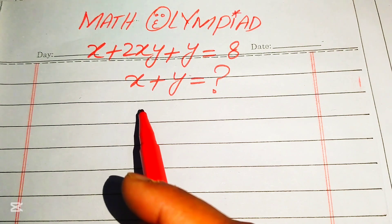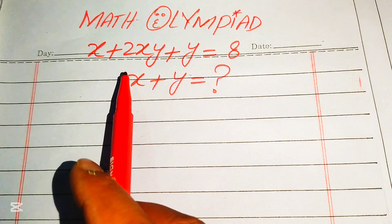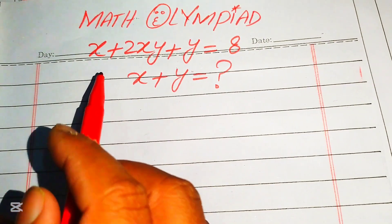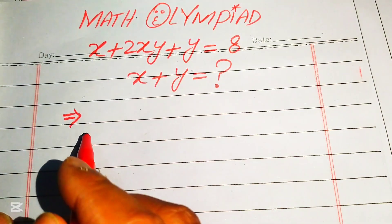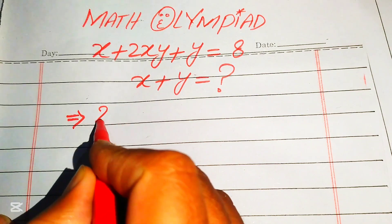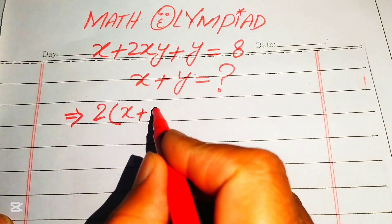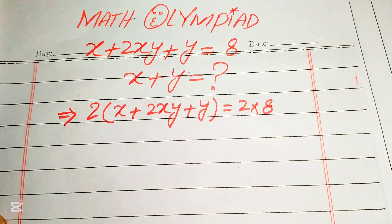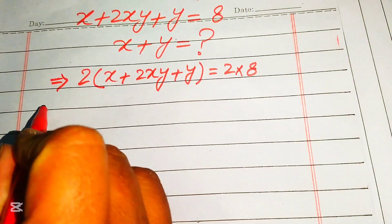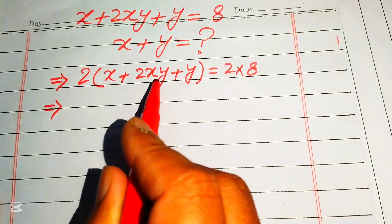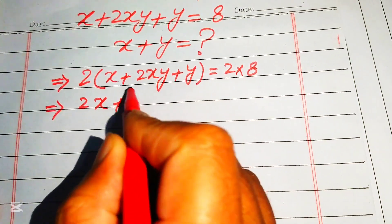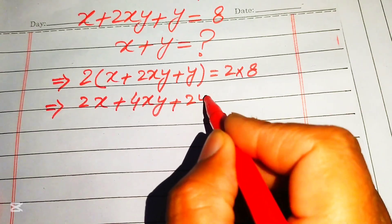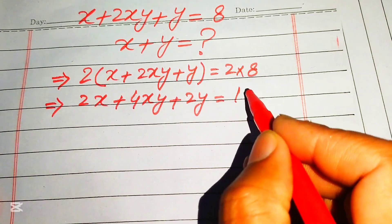The very first step is to focus on this equation and try to make the factors. In order to do that, we multiply both sides by 2. Distributing the 2, we get 2x plus 4xy plus 2y equals 16.